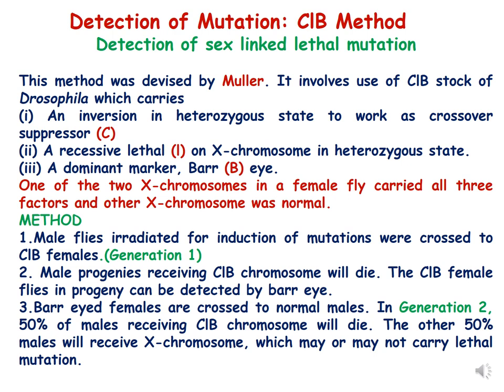After the cross, you get generation one of flies. In this F1 generation, male progenies receiving the CLB chromosome will die because they have one copy of the lethal gene L. However, CLB female flies in the progeny will survive — although they carry the lethal gene, they have a corresponding wild-type gene on the other X chromosome. They can be identified from other flies because they have bar eye.